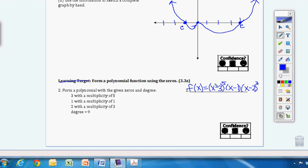And the multiplicity is three. And the degree should be nine, which should make sense. So we have five, one. So that's six, seven, eight, nine. So we are good to go.